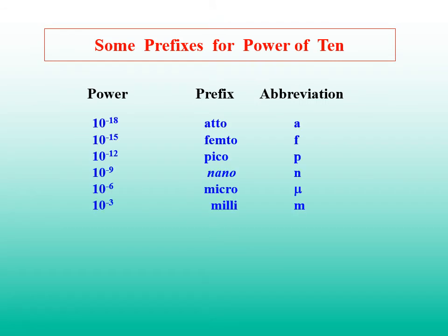Here are some prefixes for power of 10. 10 raised to the power of minus 18: atto. We call 10 raised to minus 15 as femto. 10 to minus 12: pico. 10 to minus 9: nano. 10 to minus 6: micro. 10 to minus 3: milli. We call 10 to the power of 3: kilo. 10 to 6: mega. 10 to 9: giga. 10 to 12: tera. 10 to 15: peta. 10 to 18: exa.